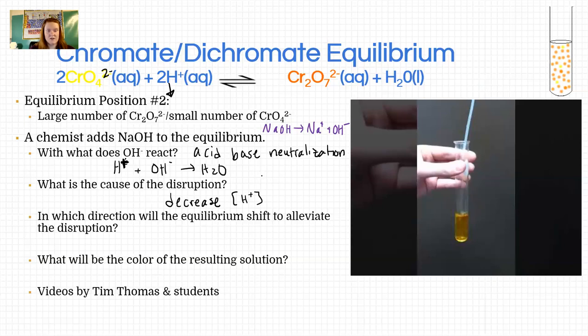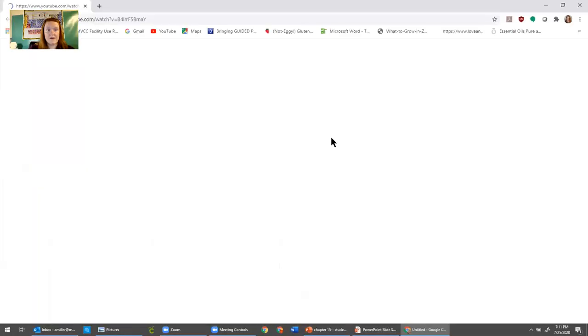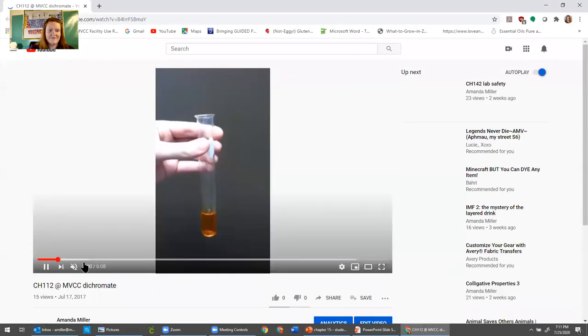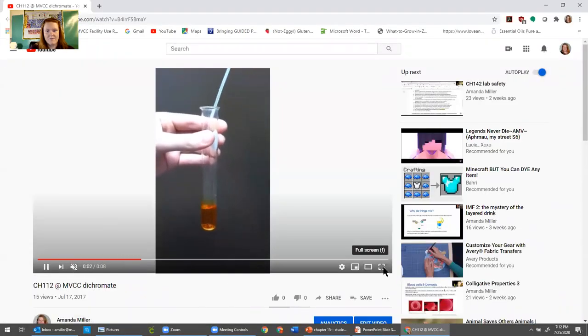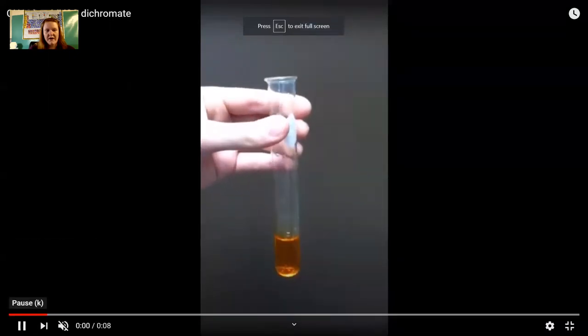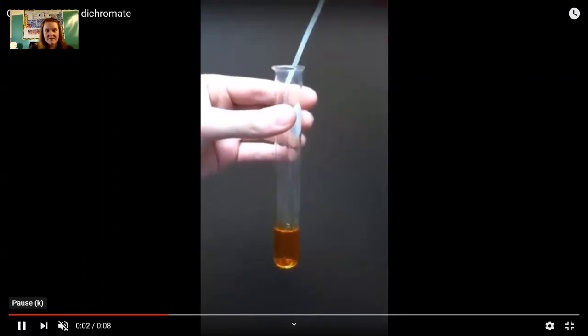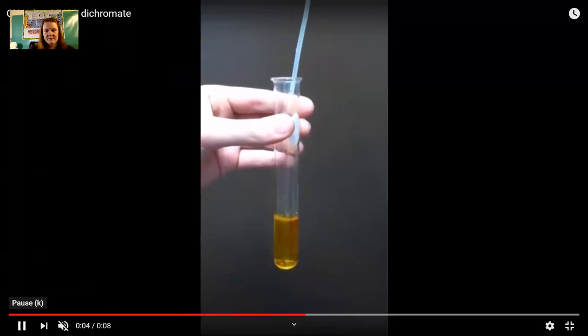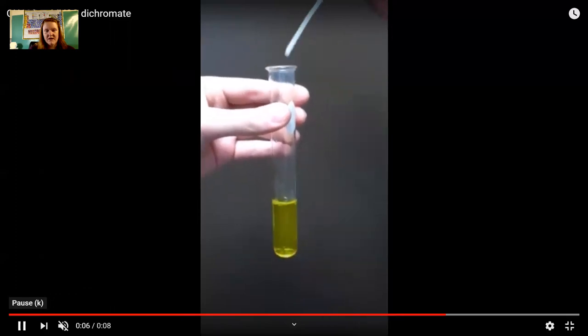Pause the video and make your prediction. Okay, so we're going to watch the video and we're going to see what happens to this video in a video. Let's go back. Okay, so orange to start with. Then we're going to add the NaOH in a pipette. And it turns super yellow.